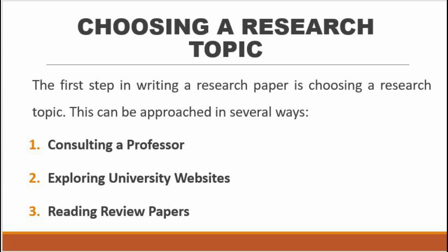Choosing a research topic: The first step in writing a research paper is choosing a research topic. This can be approached in several ways. First, consult a professor — approach a professor and ask them to suggest a research topic based on their area of expertise. Second, explore university websites to see the different areas professors are working on, read their research papers, and use that as a base to find your own research topic.